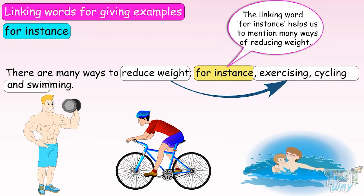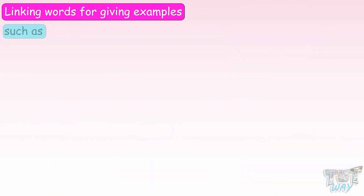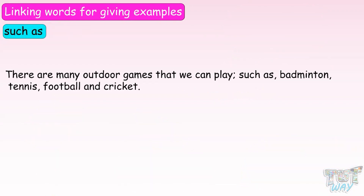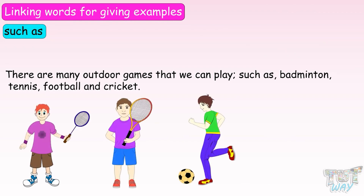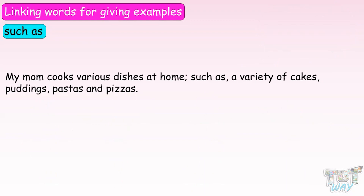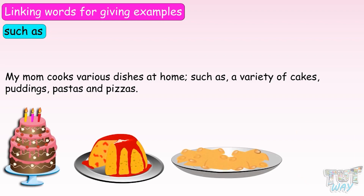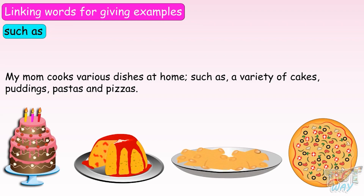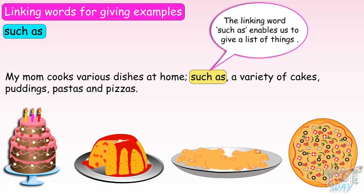Next linking word is 'such as'. 'There are many outdoor games that we can play, such as badminton, tennis, football, and cricket.' So, 'such as' also enables us to give a list of things. 'My mom cooks various dishes at home, such as a variety of cakes, puddings, pastas, and pizzas.' Here again, 'such as' enables us to give a list of things.